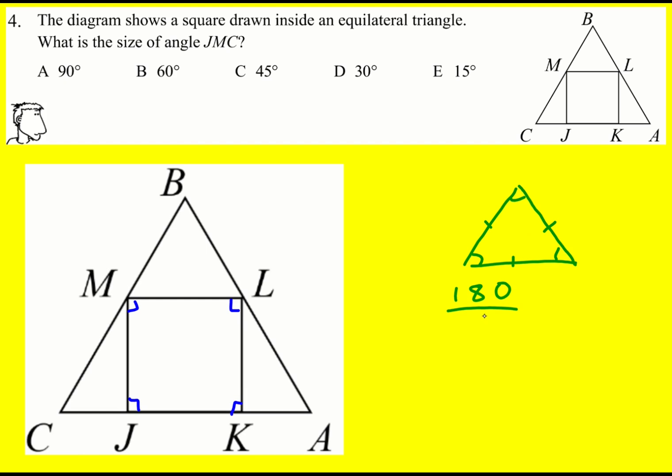The angles add to 180, so divide by 3 because you've got 3 that are identical, which gives 60. Which means that angle there is 60.